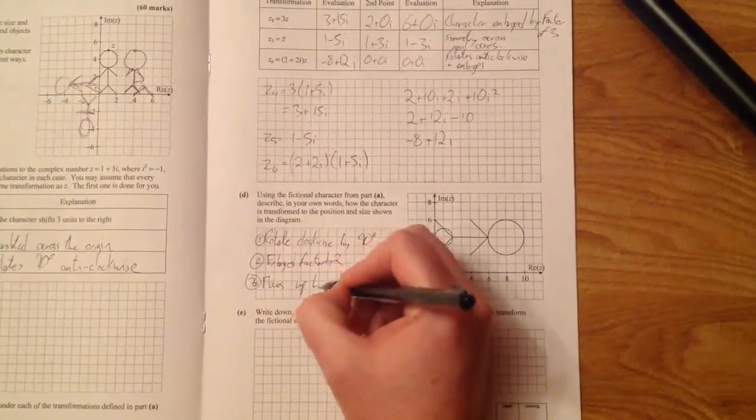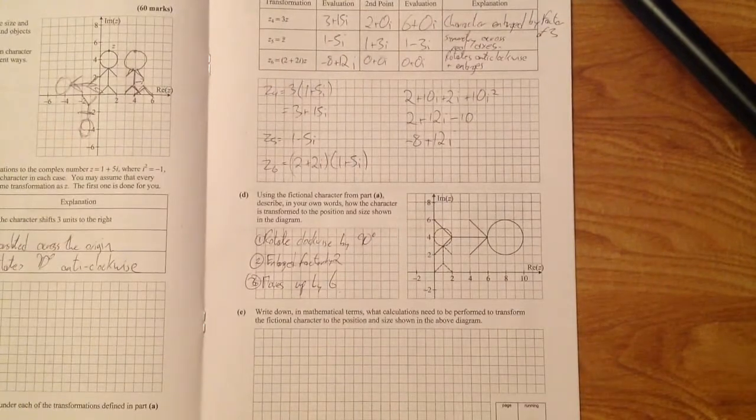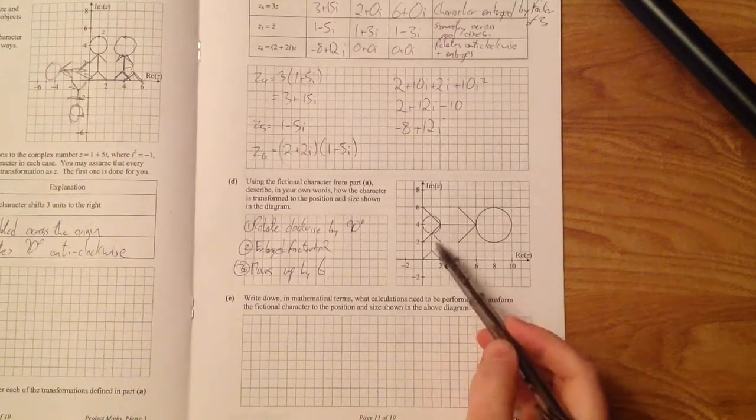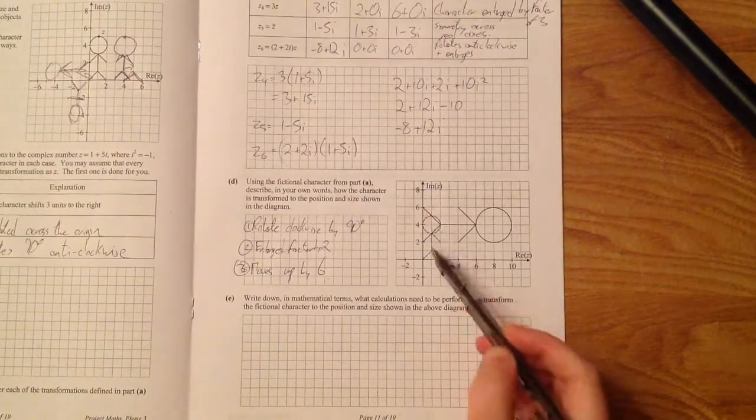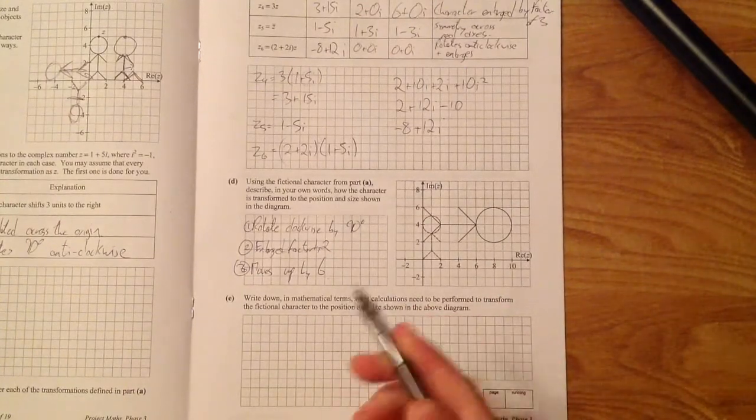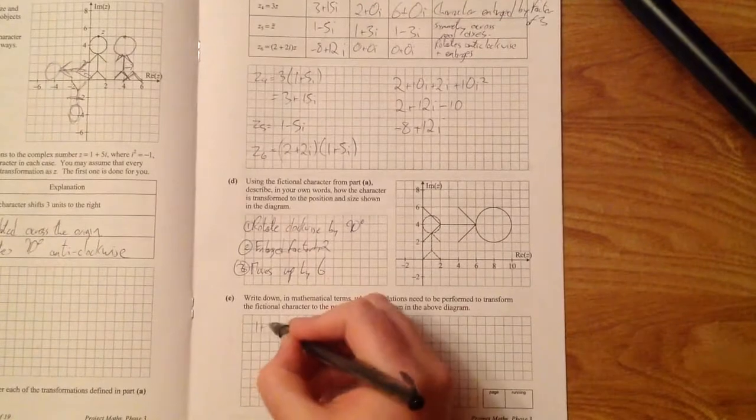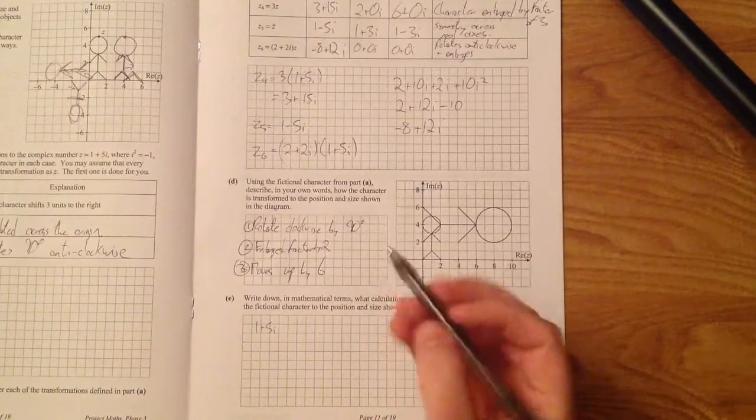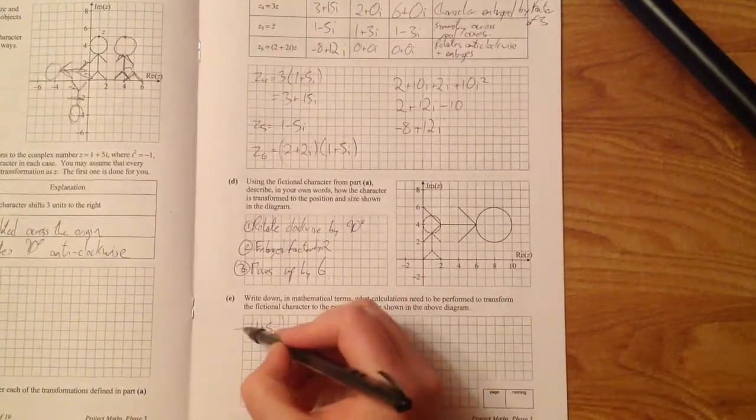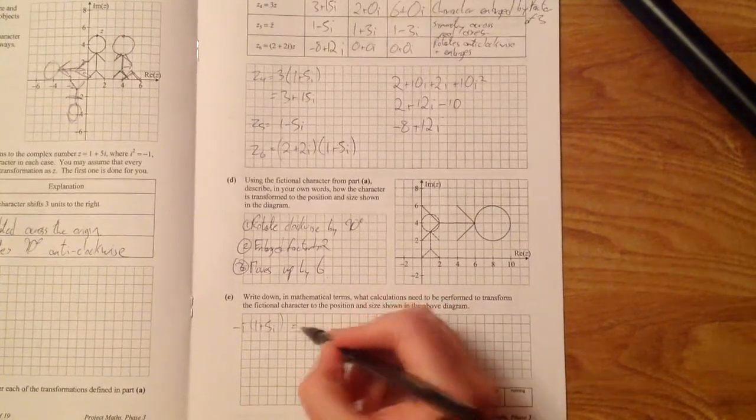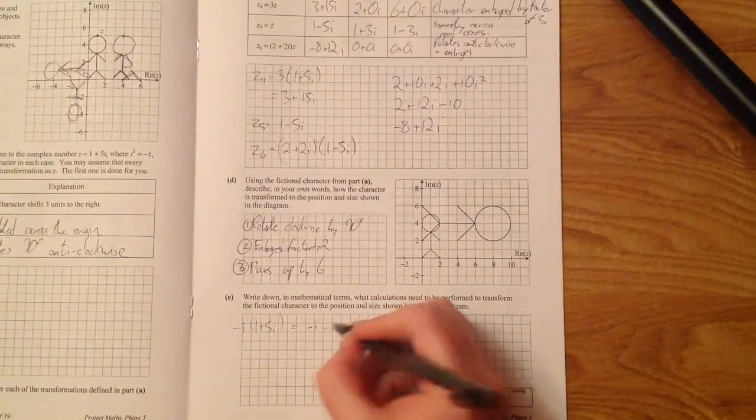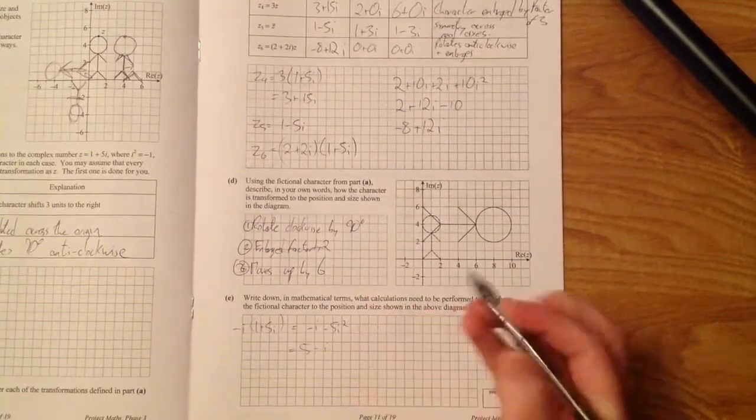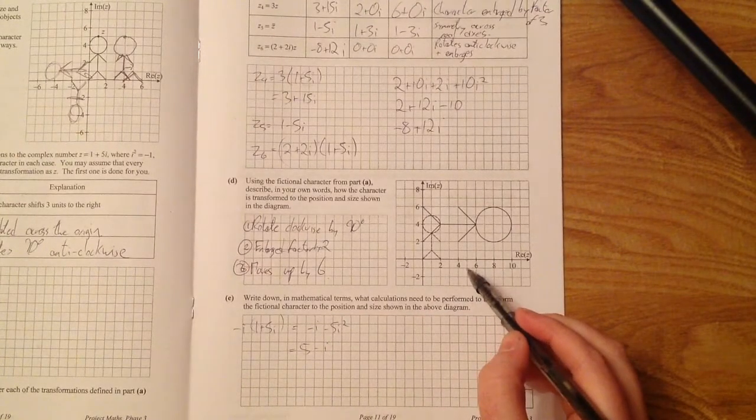Part E is asking for you to write down in mathematical terms what you would have to do. So you can pick any point on our character and explain how it goes. So say you took this point, explain how it gets up here, and how the whole enlargement thing happens. Well, we'll go with 1 plus 5i. So 1 plus 5i. And the first thing to do is to rotate any complex number by 90 degrees clockwise. You need to multiply it by a negative imaginary number. And you get minus i minus 5i squared. And that works out to be plus 5 minus i. So plus 5, which is here, minus i, which is down here.